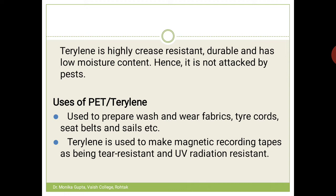PET is used to make PET bottles — many bottles are labeled PET. It is used to prepare wash-and-wear fabrics, tire cords, seat belts, sails, and it is also used to make magnetic recording tapes because it is resistant to tear and abrasion resistant.